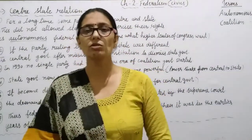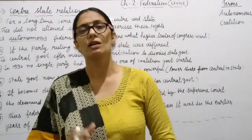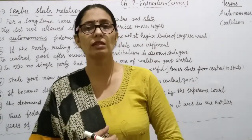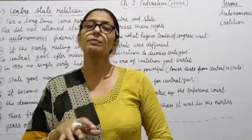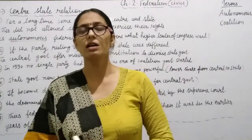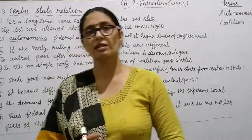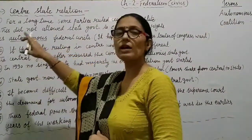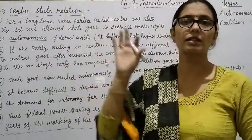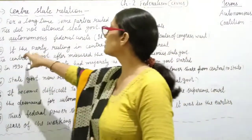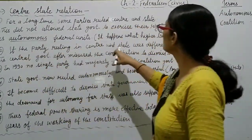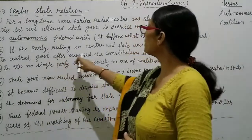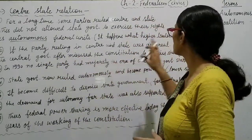The state governments were ruled under the central party. The Congress leaders who wanted to make higher leaders — the central government — misused the constitution and dismissed state governments.